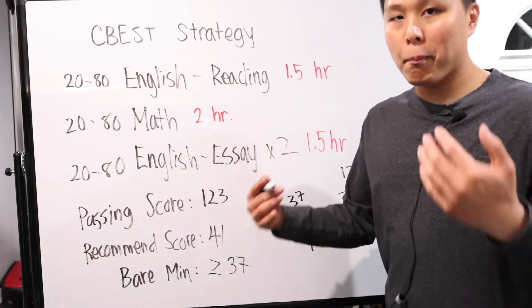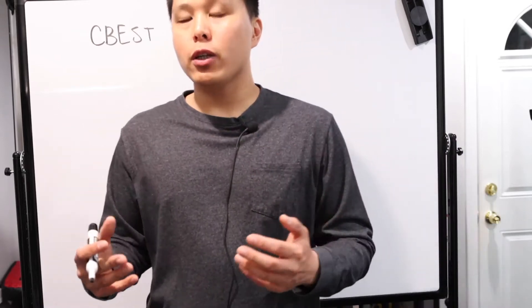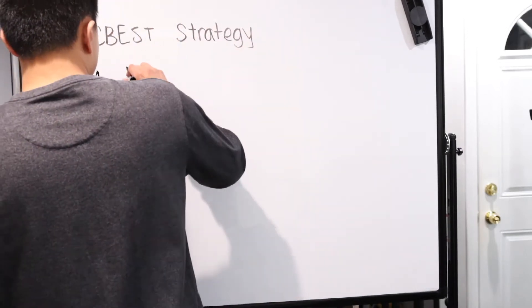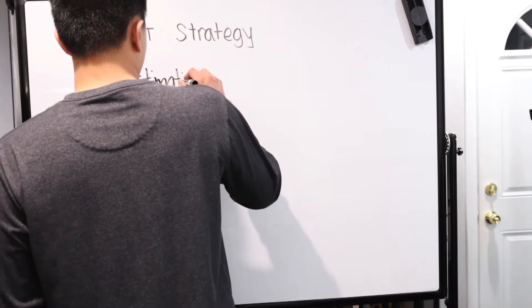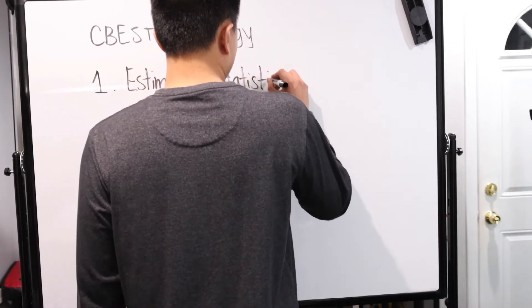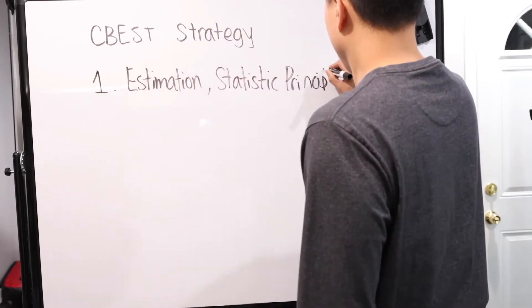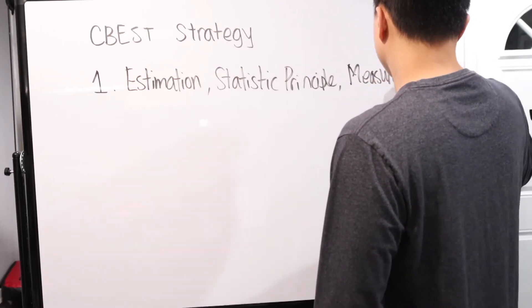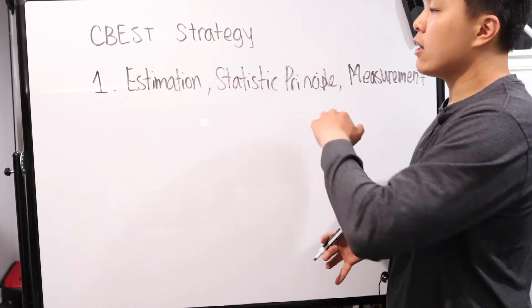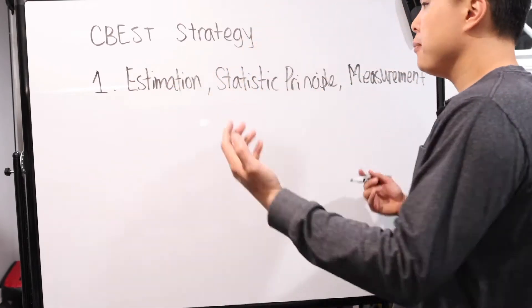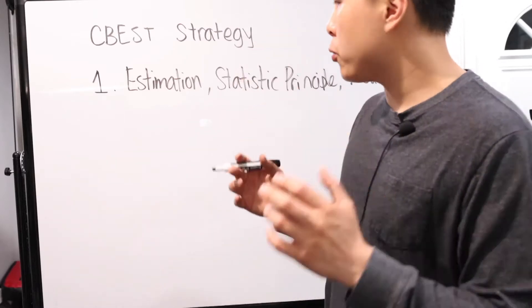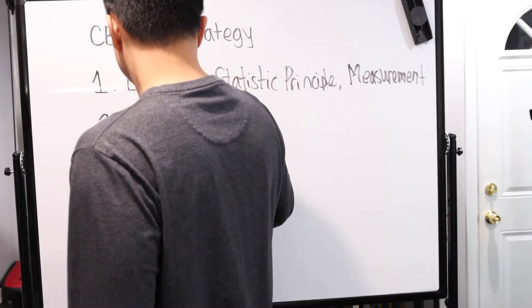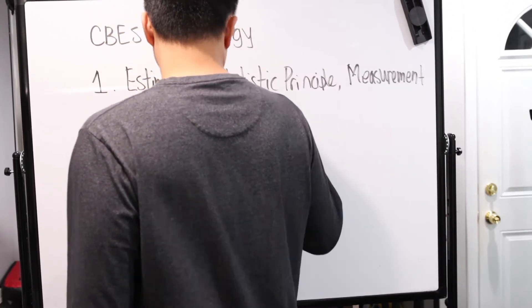So let's talk about the math section. All right. So in the math section itself, they introduced it or broke it down into three specific categories of problems. So the first one is estimation, statistics principle, and measurement. That's our first category. Now, here's the thing. And honestly, I'm just introducing you guys to the category because they say it on the website. That's what they break it down as. But there is more nuance.